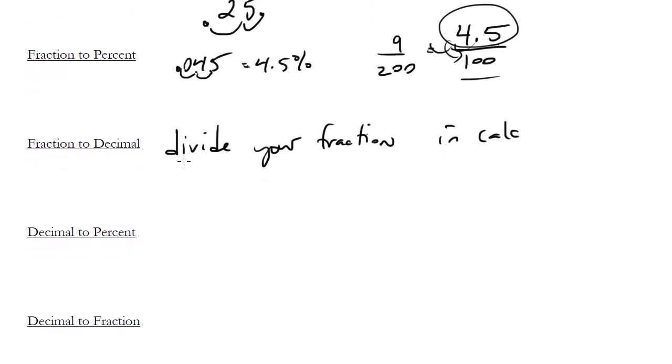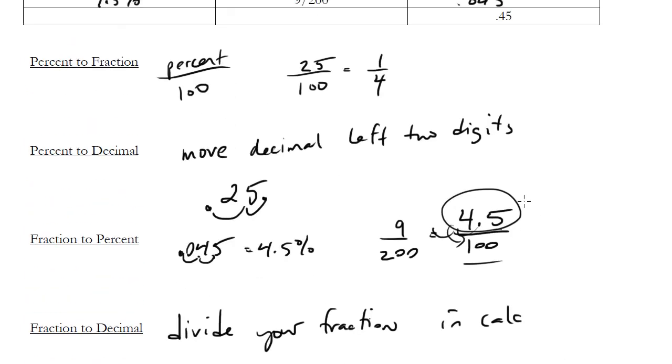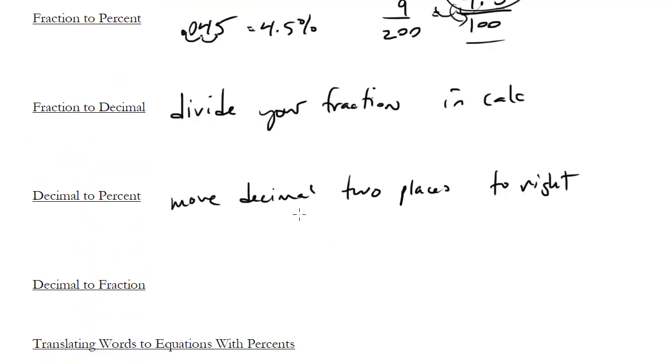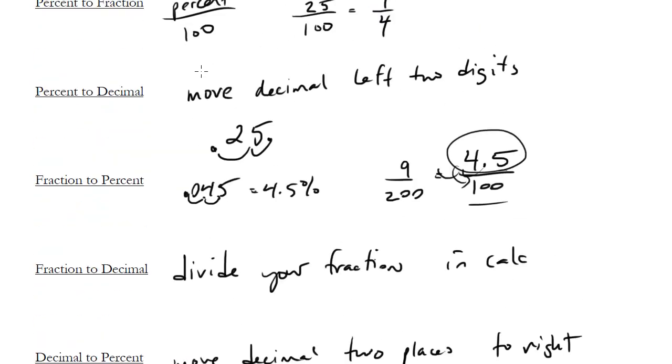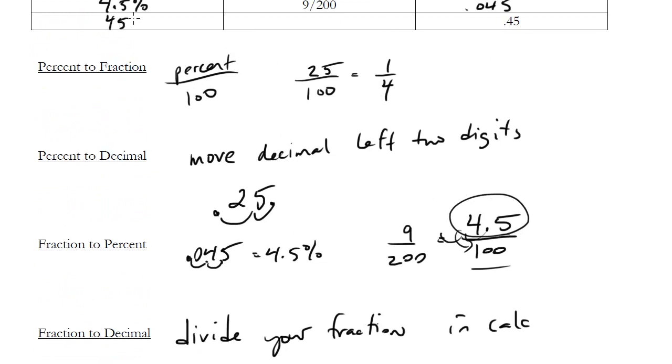How about a decimal to a percent? Well here you just reverse what we looked at before. So a decimal to a percent, you move decimal two places to the right. So in our example, we had .45. To make this a percent, we just go boom, boom. We get 45%.